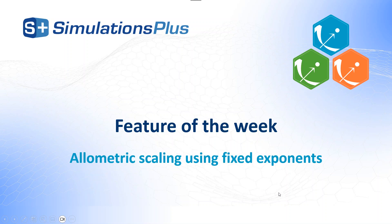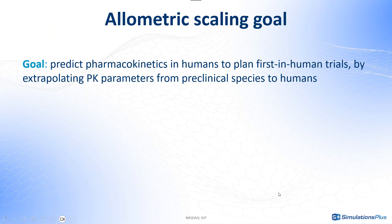Hi everyone. In this video I will explain step by step how to do allometric scaling using fixed coefficients in Monolix. The goal of allometric scaling is to predict pharmacokinetics in humans to plan first-in-human trials by extrapolating PK parameters from preclinical trials in other species to humans.